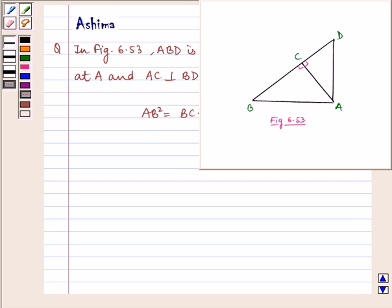Here we have the figure 6.53 in which ABD is a triangle right angled at A and AC is perpendicular to BD.